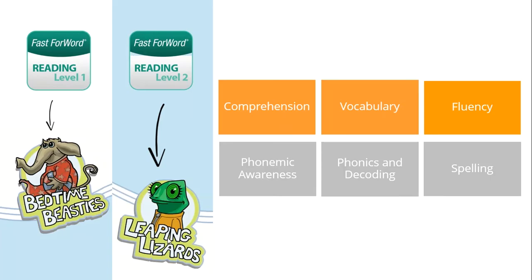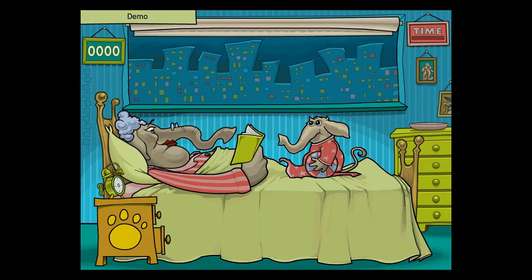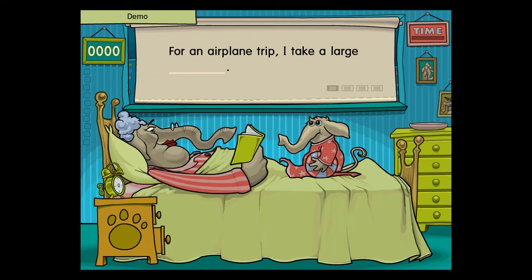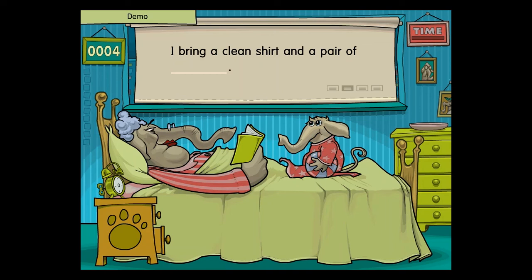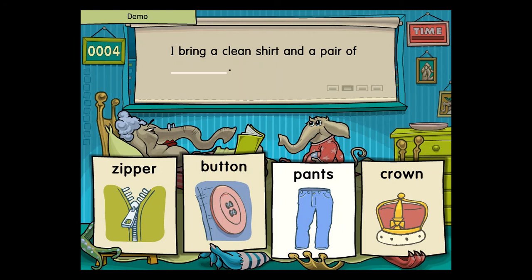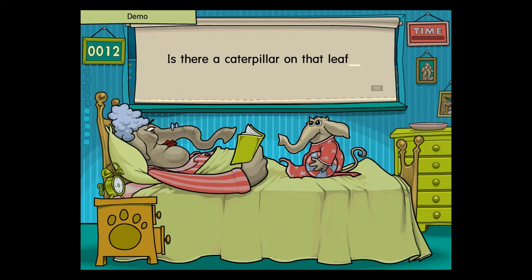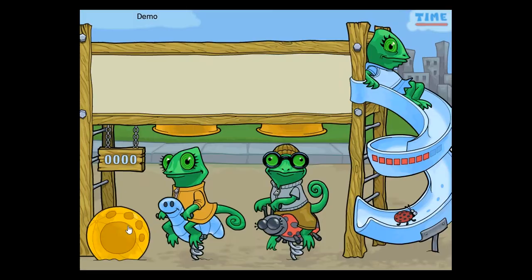Let's look at Bedtime Beasties from the Reading 1 program and Leaping Lizards from the Reading 2 program. For an airplane trip, I take a large suitcase. I bring a clean shirt and a pair of pants. Students also practice using capitals and punctuation. Sugar is used to make things sweet. And they also practice age-appropriate rules of English grammar.